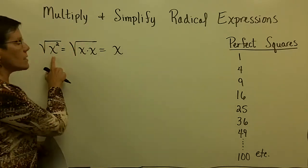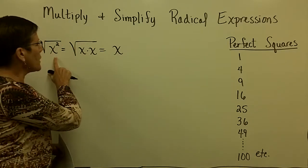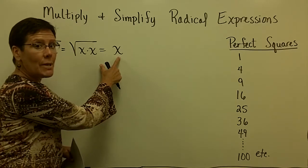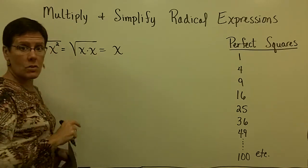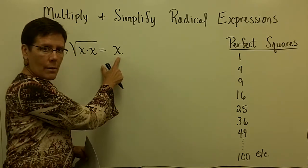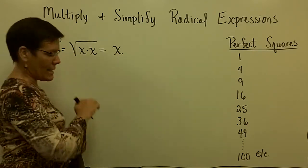I want to take you back to the fact that in our last segment, we said that the square root of x squared was equal to x because x times x is x squared. We are looking for the value times itself that will give you the radicand.